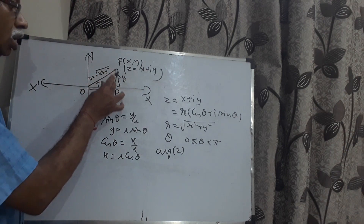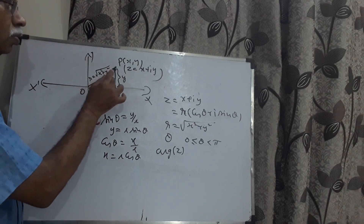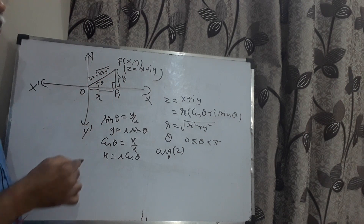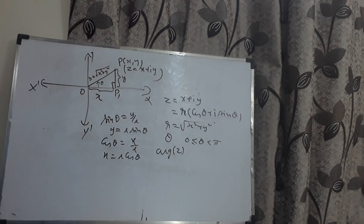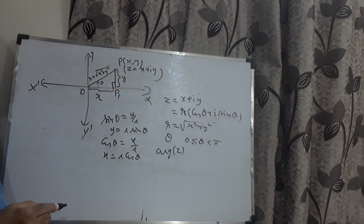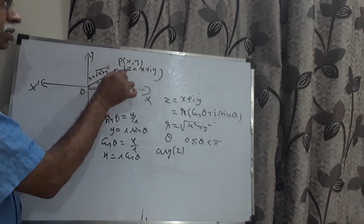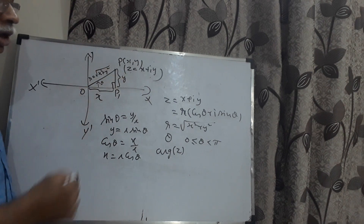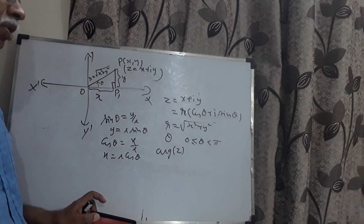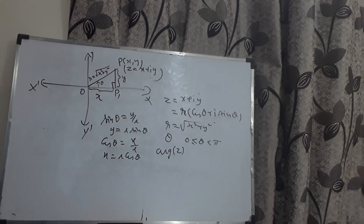The geometrical meaning of the modulus is that it is the distance between O(0,0) and point P(x, y) in the coordinate plane, where P(x, y) represents z equals x plus iy. The angle made by the segment OP with the positive direction of the x-axis is known as the amplitude or argument. The value of theta such that minus pi less than theta less than or equal to pi is the principal value of the argument.